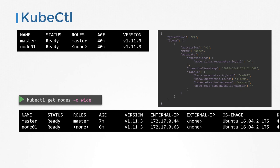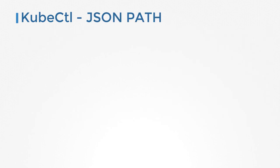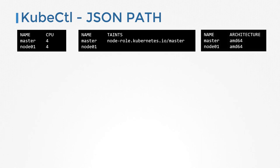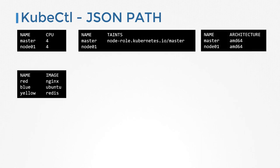You can see them with kubectl describe, but what if you want to see it like a report? For example, see nodes and their CPU counts in a tabular format, list nodes and the taints set on them, the architecture, or print the list of pods and the images they use. None of the built-in commands can give you these in that format. That's where JSON path queries can help — with JSON path queries, you can filter and format the output of a command as you like.